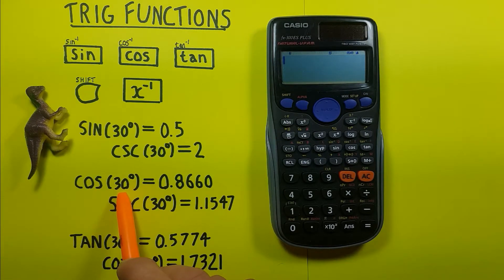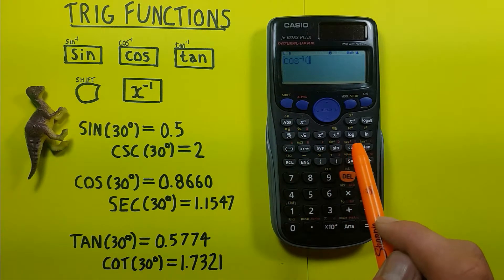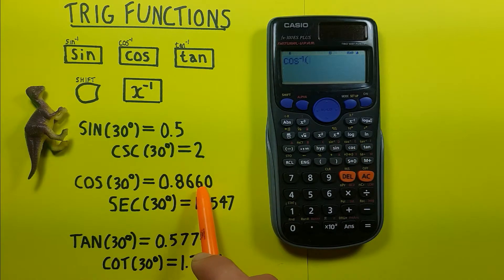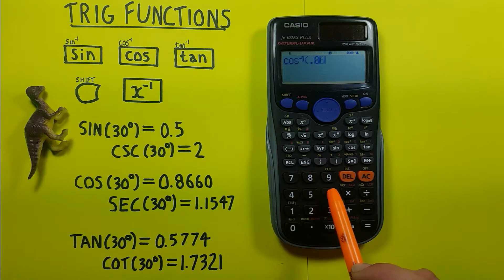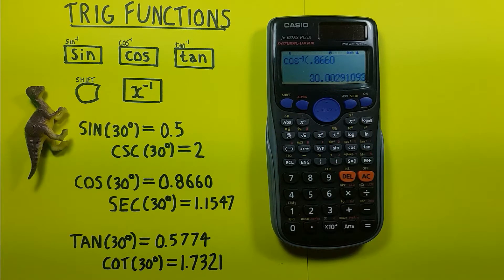Same thing for arc cos. We can go shift cos. Remember for this one we got 0.8660 rounded, so we enter 0.8660, press equals, and we get what would round to 30 degrees.